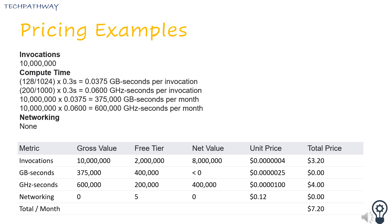Example 1: A simple background function with 128 MB of memory and a 200 MHz CPU, invoked 10 million times per month and running for 300 ms each time, using only Google APIs with no billable egress. The breakdown covers invocations, compute time, and networking.